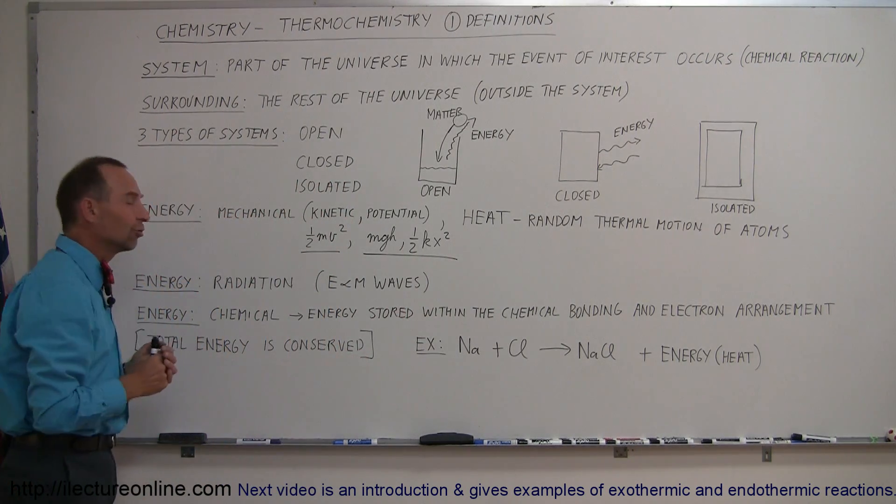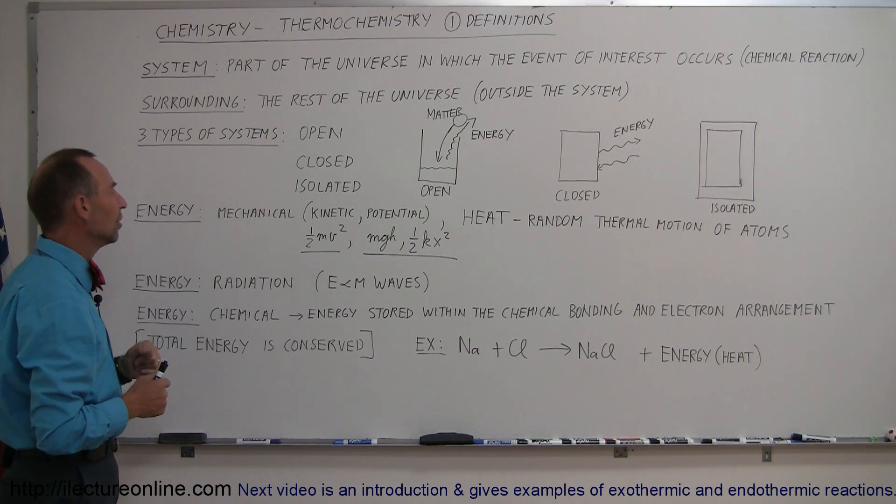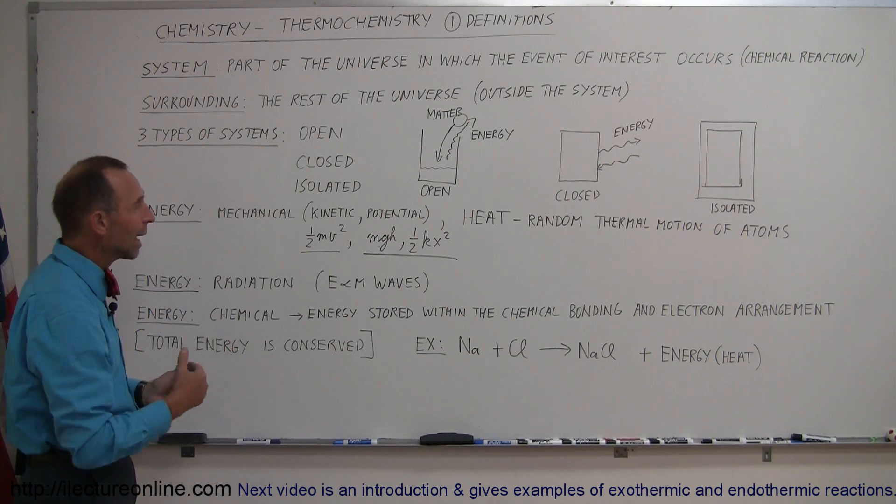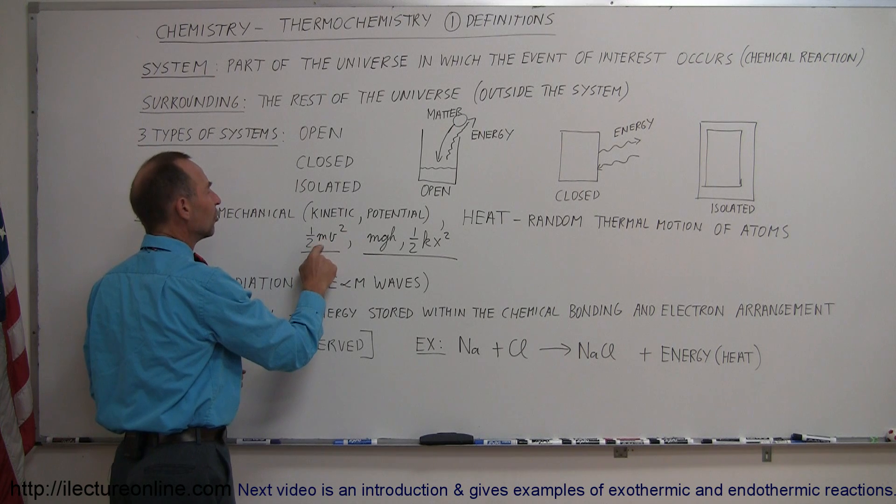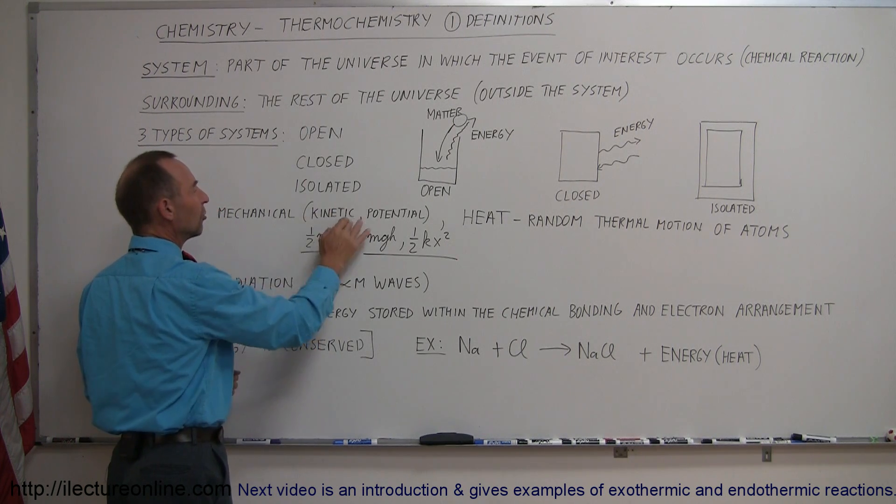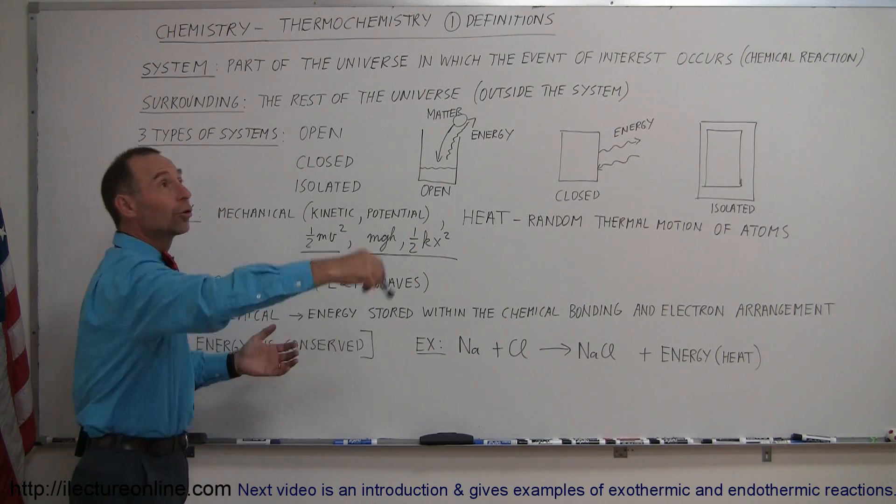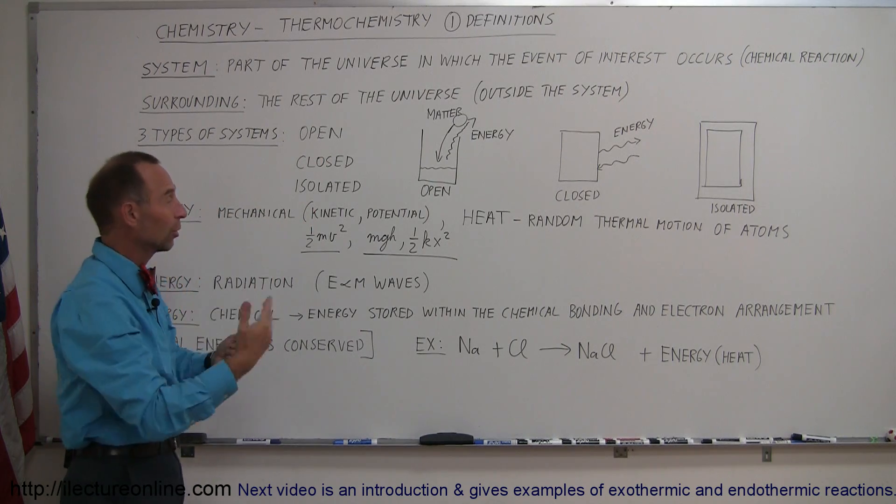We also need to understand that there's different kinds of energy. We have, for example, mechanical energy. Now, this is something we typically talk about in physics, but it has some application to chemistry. We have kinetic energy, that means there is motion. V stands for velocity, M stands for mass. The equation associated with kinetic energy is ½mv².